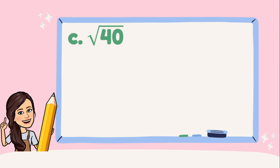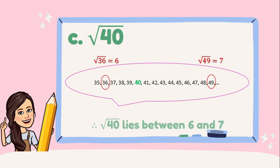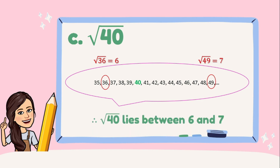Next, square root of 40. Since 40 is not a perfect square integer, let's have this illustration. Which among these numbers are the two perfect square integers where 40 lies in between? We have 36 and 49. Extracting their square roots, √36 = 6 and √49 = 7. Therefore, √40 lies between 6 and 7.